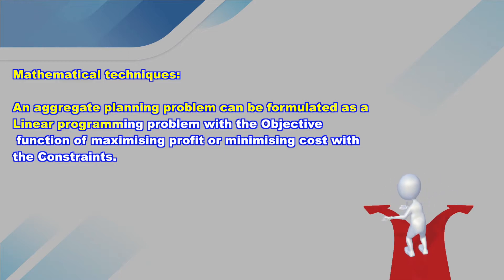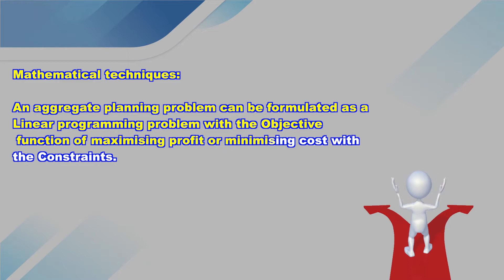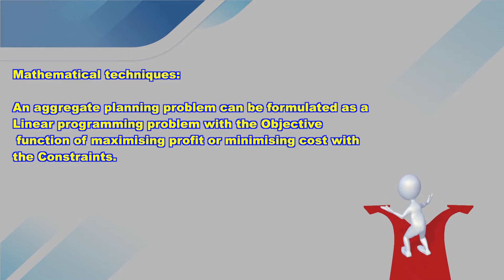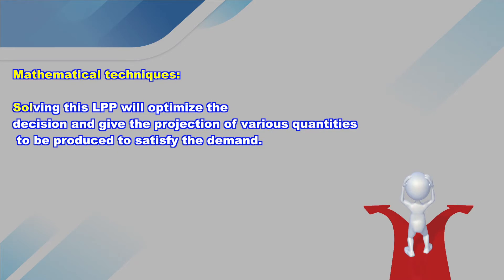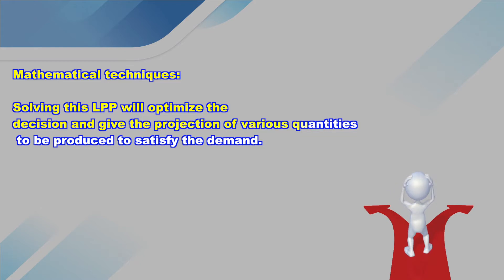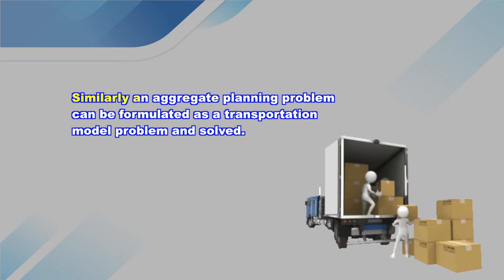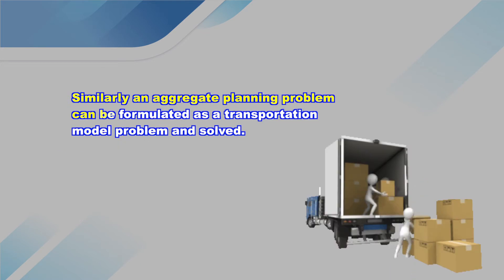Mathematical techniques: an aggregate planning problem can be formulated as a linear programming problem with the objective function of maximizing profit or minimizing cost with constraints. Solving this linear programming problem will optimize the decision and give the projection of various quantities to be produced to satisfy the demand.